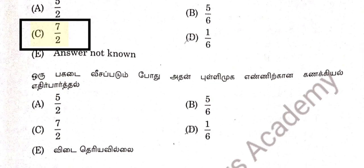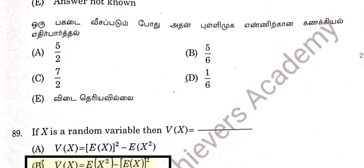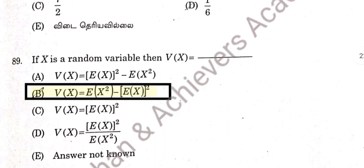Question 88: The expectation of the number is 7 by 2. This is a repeated question.